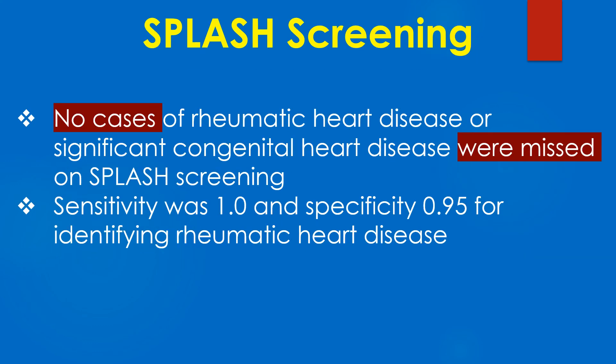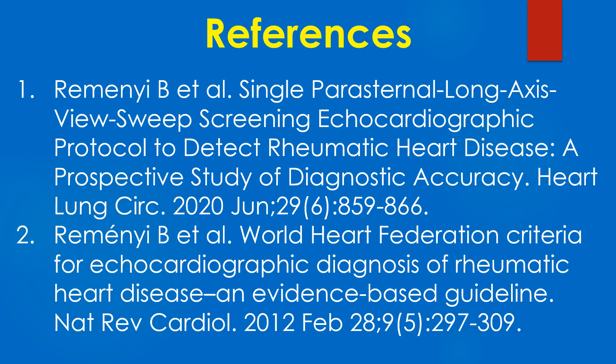No cases of rheumatic heart disease or significant congenital heart disease were missed on splash screening. Sensitivity was 1.0 and specificity 0.95 for identifying rheumatic heart disease. Here is the journal reference on splash screening.